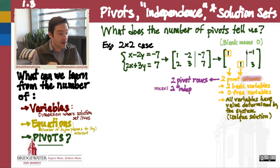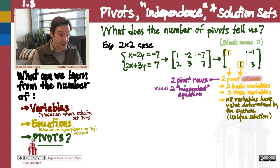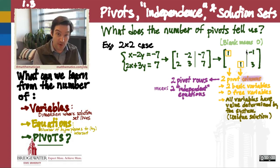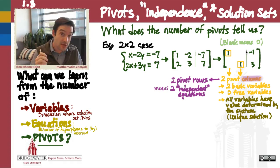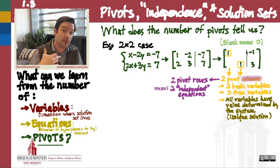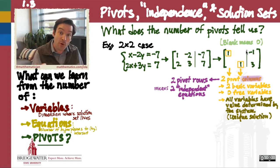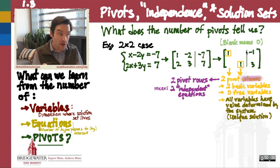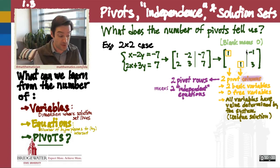Two pivot rows means that both of my equations in this linear system are independent of one another. Each one of them is telling its own story, bringing its own information to this linear system. And so both of those equations are necessary for us to understand the nature of the solution set.